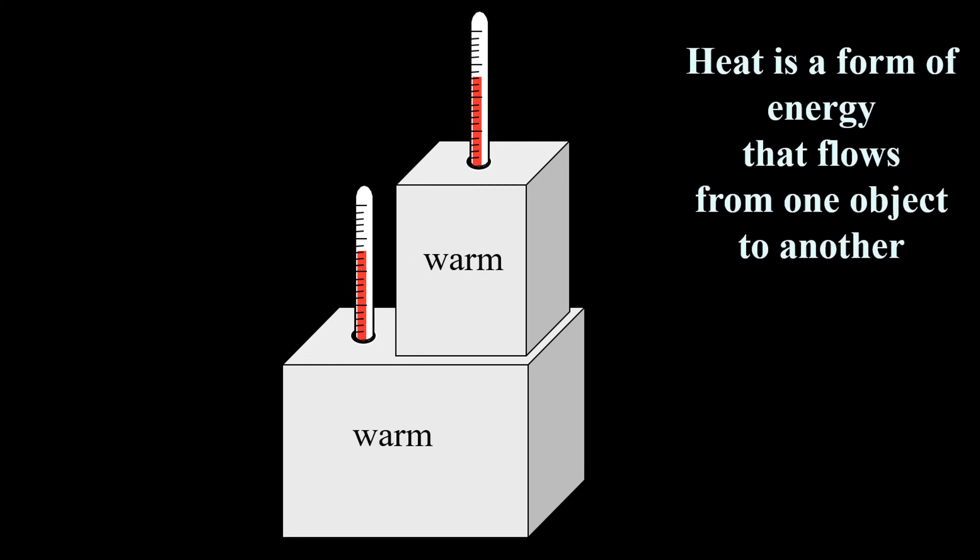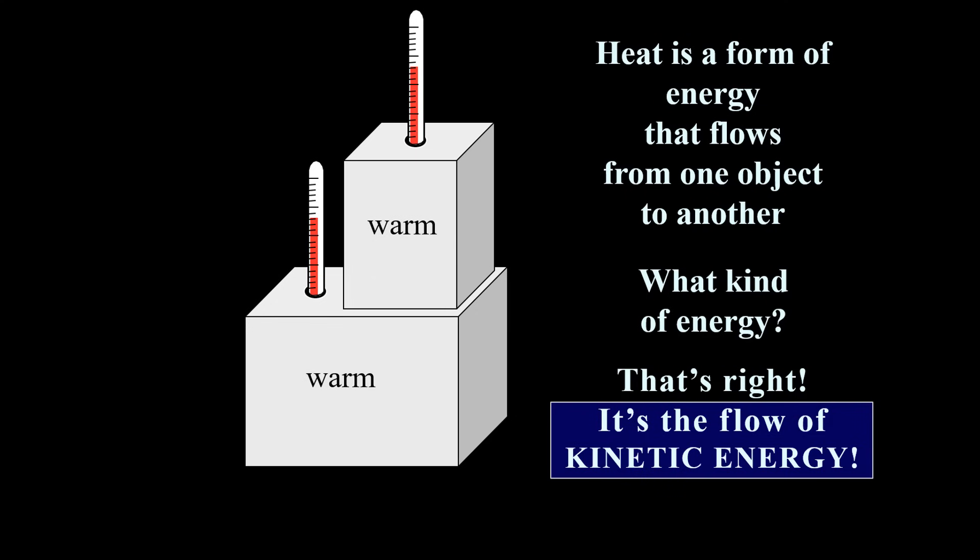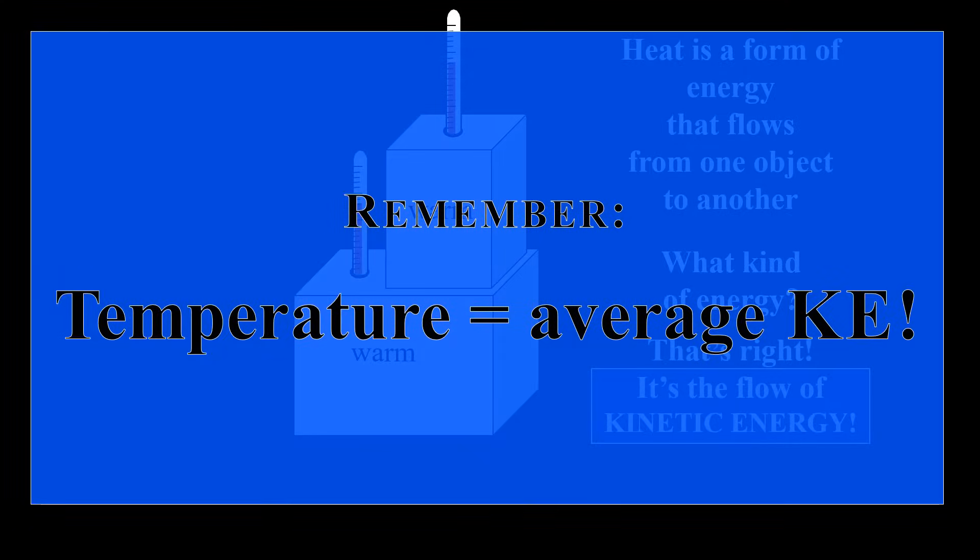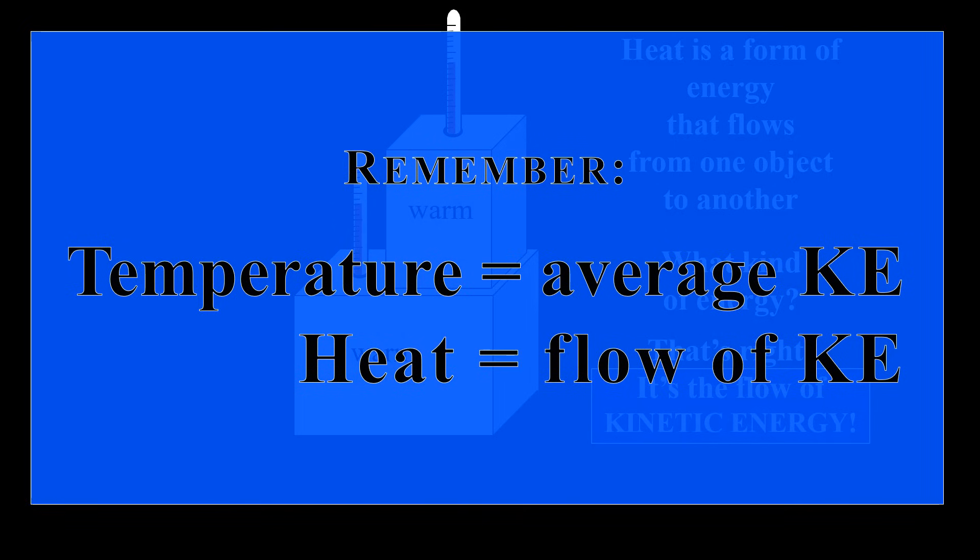Heat is a form of energy that flows from one object to another. What kind of energy? That's right, it's the flow of kinetic energy. And it is important to remember that the temperature is the average kinetic energy of a substance in contrast with heat, which is the flow of kinetic energy.